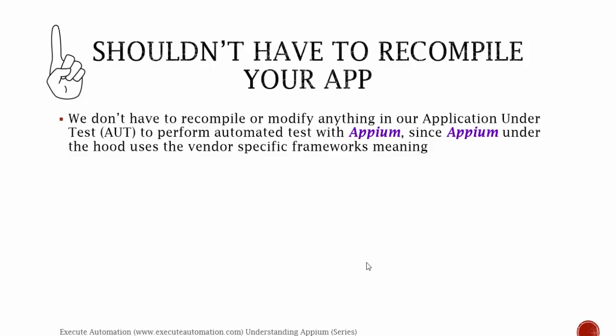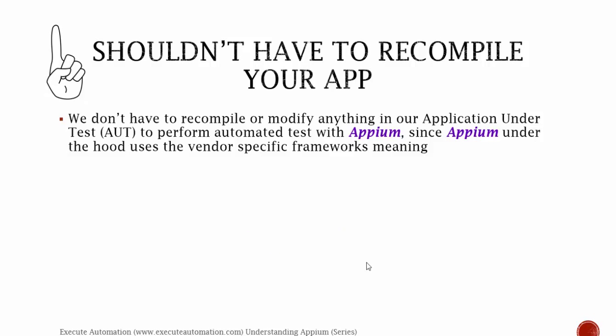The first philosophy is you shouldn't have to recompile your app, which is great since Robotium doesn't support this feature — you need to recompile your app to support automation. With Appium, we don't have to recompile or modify anything in our application under test to perform automated tests, since Appium under the hood uses the vendor-specific framework.